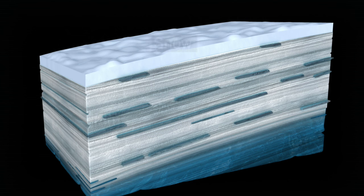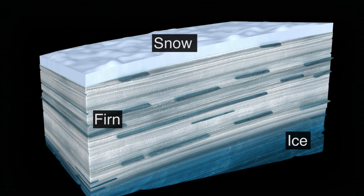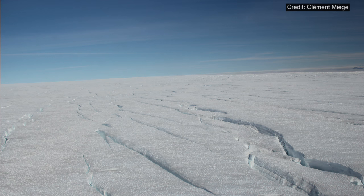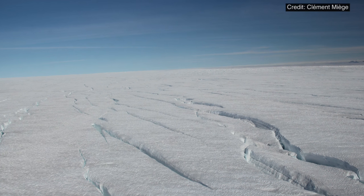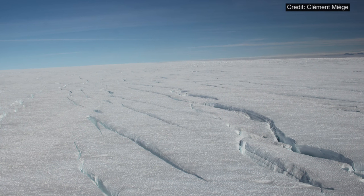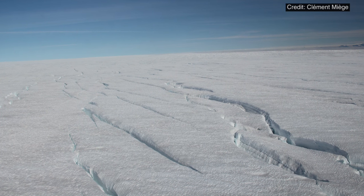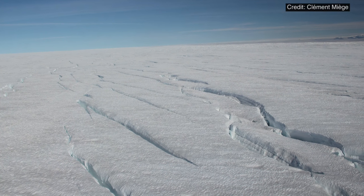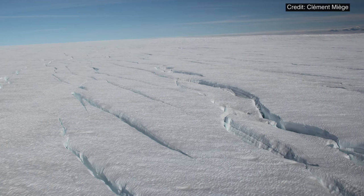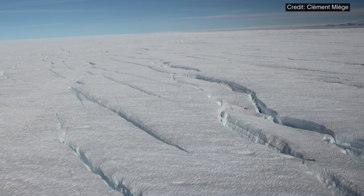This region is known as firn, and it sits between the fresh snow above and the solid ice below. In some places, so much water can accumulate in the firn that it acts as a natural aquifer within an ice sheet or a glacier.